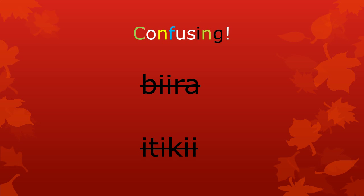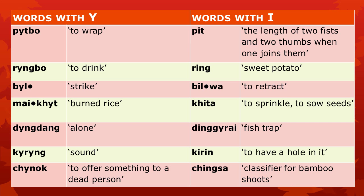If we did not use the letter Ö, spelling these words would not be possible, and writing and reading Atong would be very confusing. Here we see some more words that show us that it is very important to use both the letters E and Ö in Atong spelling.